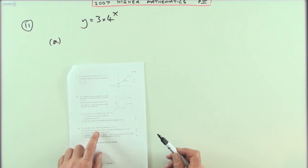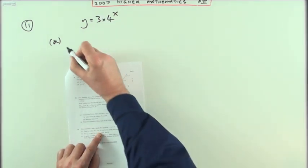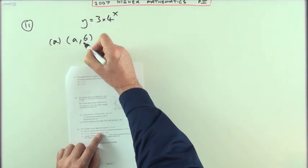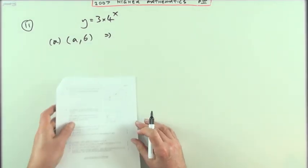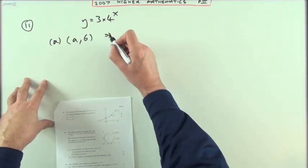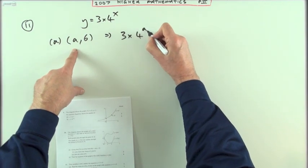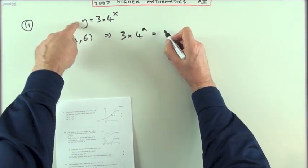What's it say? Find the value of a if (a,6) lies on the graph with that equation. Well that's just a substitution. (a,6) lies on that simply means put 6 instead of y and a instead of x. So that means I've got 3 times 4 to the a equals 6.